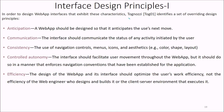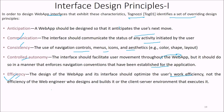Tognazzi identified overriding interface design principles. Anticipation means the web app should be designed so users can anticipate what comes next, since it is navigation-based. Communication means the interface should communicate the status of any activity initiated by the user. Consistency means navigation controls, menus, icons, and aesthetics should be consistent everywhere. Controlled autonomy means the interface should facilitate user movement throughout the web app while enforcing established navigation conventions. Efficiency means the design should optimize the user's work efficiency, not the web engineer's or client server environment.